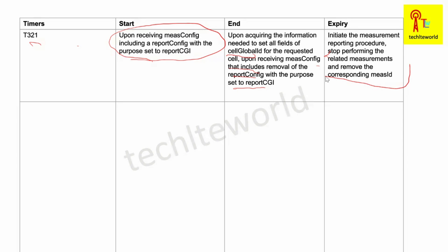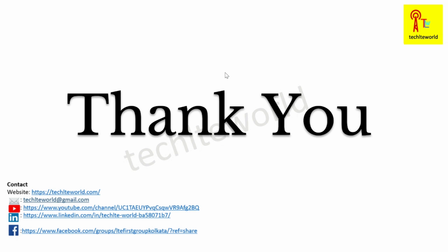To summarize T321: it starts upon receiving a measConfig including a report config with purpose to report CGI, ends upon acquiring the Cell Global ID or upon removal of the report config, and upon expiry it initiates the measurement report procedure, stops related measurements, and removes the corresponding measurement ID. That concludes our video on timers in LTE — thank you for watching.